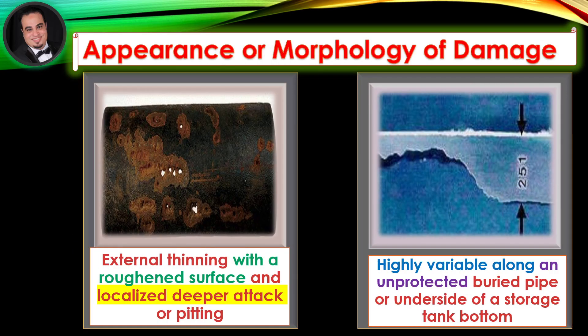Appearance or morphology of damage: Soil corrosion appears as external thinning with a roughened surface and localized deeper attack or pitting, as shown in the figure. Soil corrosion can be highly variable along an unprotected buried pipe or underside of a storage tank bottom. A cross-section through a location showing severe corrosion, with arrows pointing to areas at the original thickness.